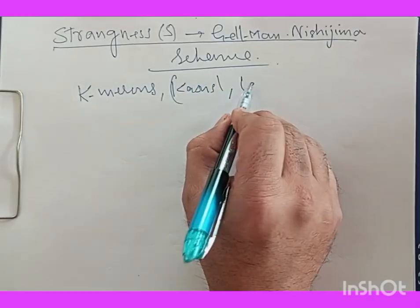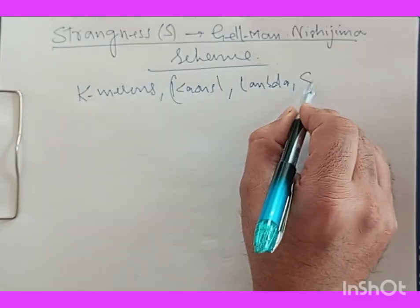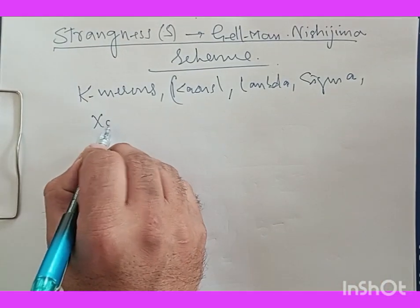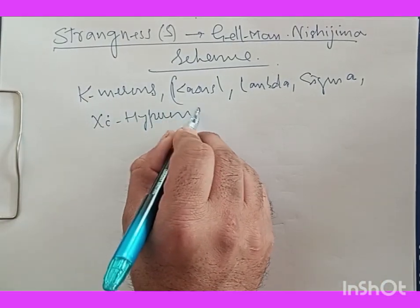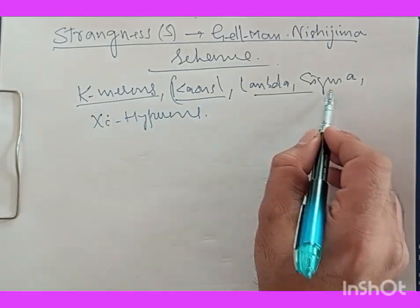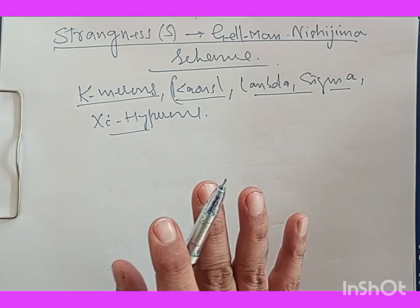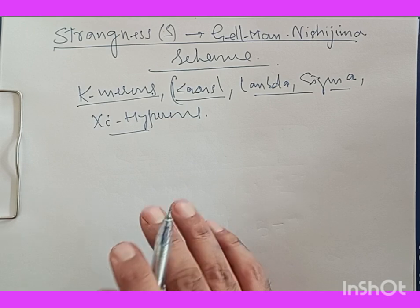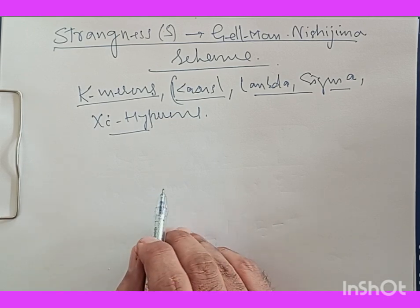K-ons, Lambda, Sigma, and Xi-Hyperons — all of these particles are called strange particles, and there are reasons for that.